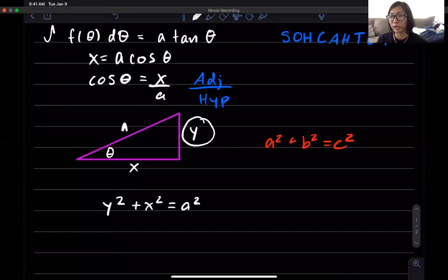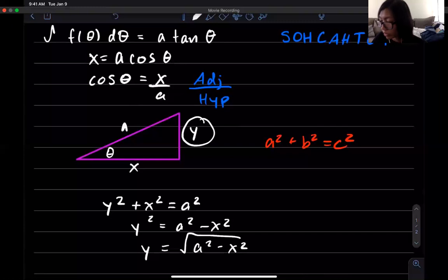So the way that I do this is pretty simple it's just very straightforward to solve for y. So I get y squared equals a squared minus x squared and then I square root both sides so I get y equals the radical a squared minus x squared.